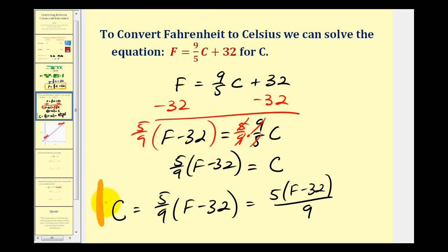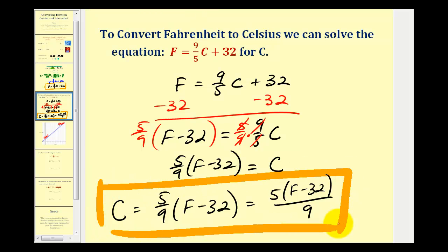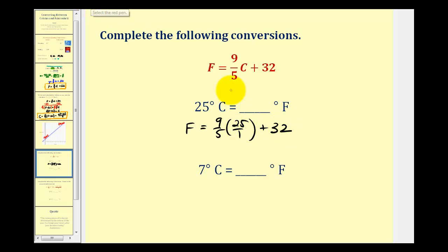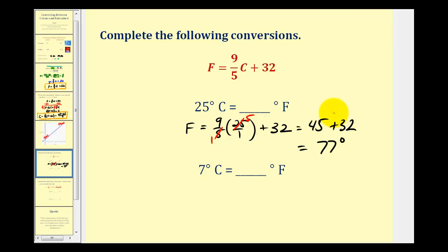This is a convenient formula to convert Fahrenheit to Celsius. Let's look at a couple of examples. To convert 25 degrees Celsius to Fahrenheit, we substitute 25 for C. We can simplify — there's one factor of five in 25 and five factors of five — giving us 9 times 5, which is 45, plus 32. So we get 77 degrees Fahrenheit.